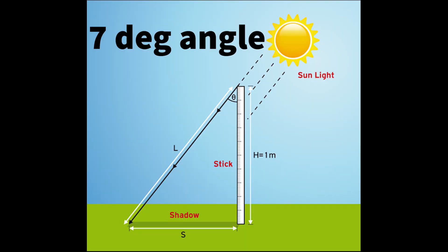What he did is, at noon in Alexandria, Egypt, he got a stick and stuck it on the ground and measured the angle based off of the shadow and the height, and he got about seven degrees.